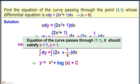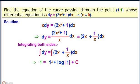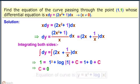Since the equation of the curve passes through (1, 1), it should satisfy x = 1, y = 1. Therefore, 1 = 1² + log|1| + c = 1 + 0 + c. Therefore c = 0. Therefore, the equation of the curve is y = x² + log|x|.